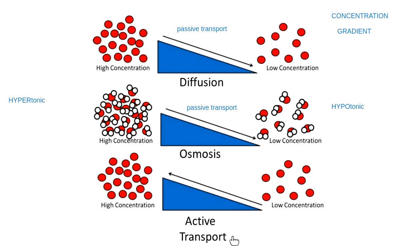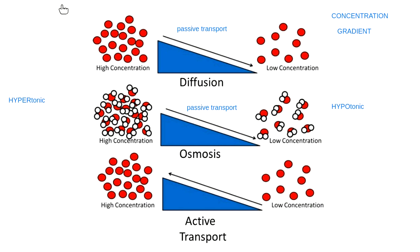When we talk about active transport, we're actually going up the slope. That means I'm taking something that I don't have a lot of on one side of the membrane and moving it to the side where there's already a lot of it. A good example we're going to talk about is how a cell works with glucose.